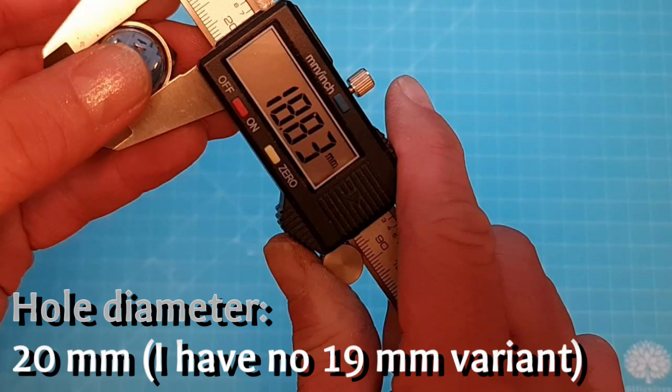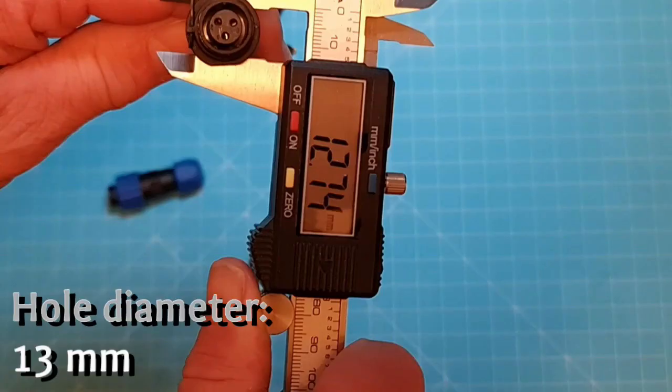I would need 20 mm holes for the power plug. Not ideal, but so it is. And finally, 13 mm hole for the socket for the thrower.